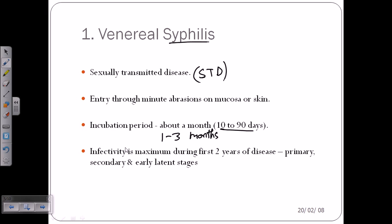Their infectivity is maximum during the first two years of the disease, including the primary, secondary, and early latent stages. Once inside the host, it is extremely difficult to remove them. The symptoms at the very beginning are very mild, so diagnosis is not easy. Visible symptoms may not appear until after two years, when Treponema pallidum is present in many regions of the body. This infection is not rapid — it is chronic, systemic, and very slow.